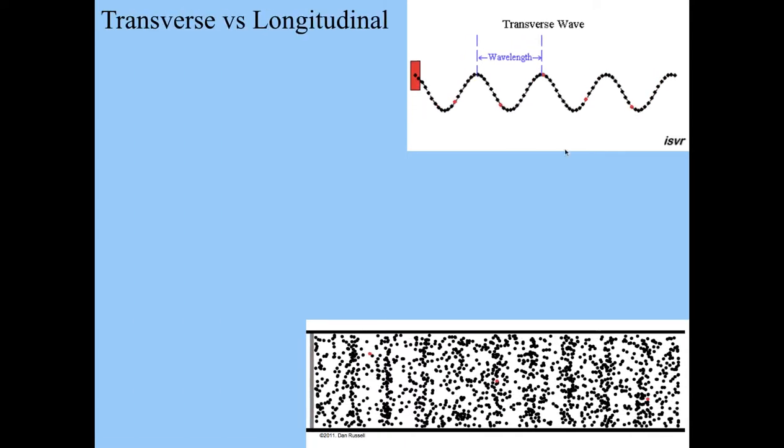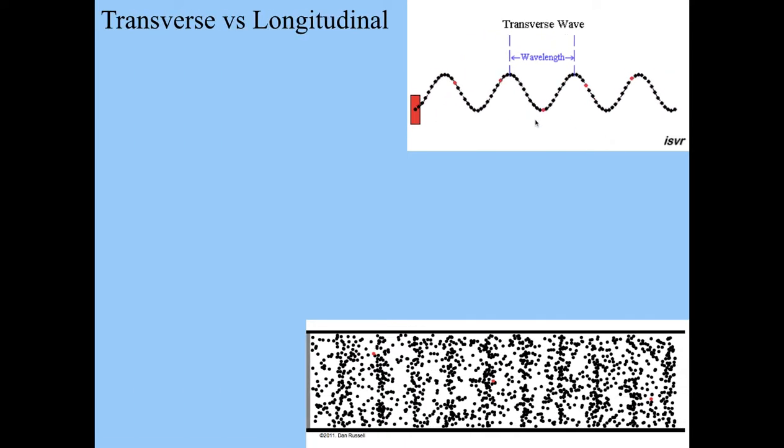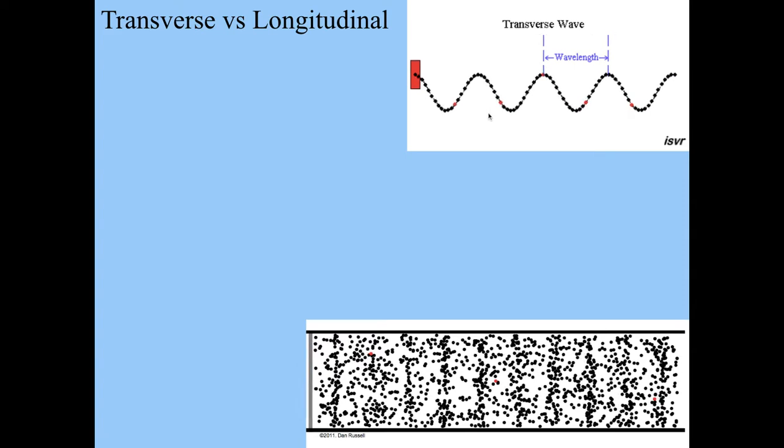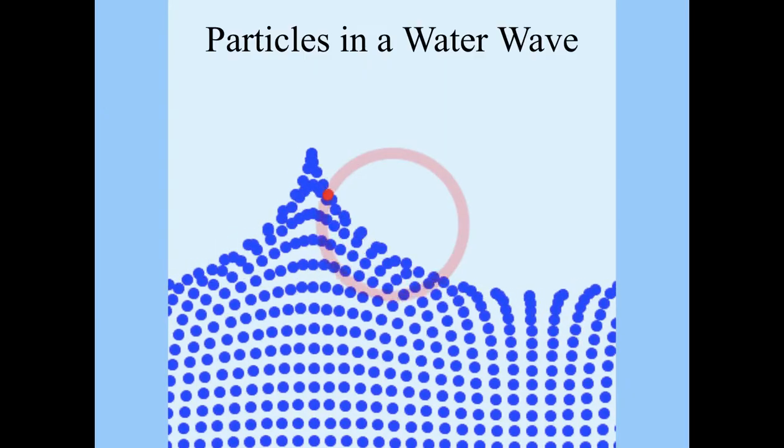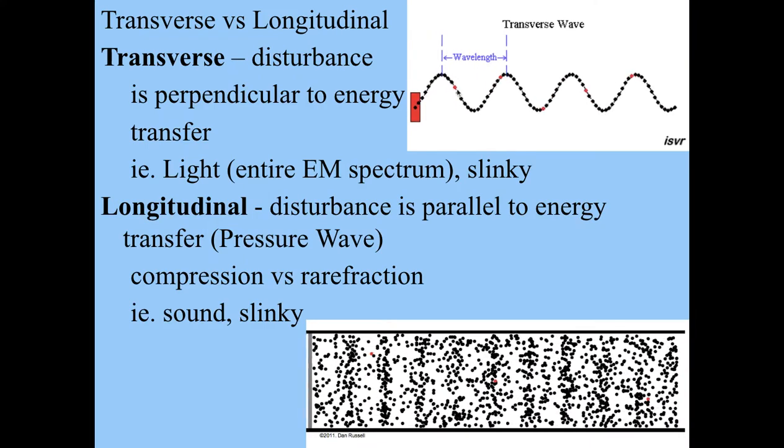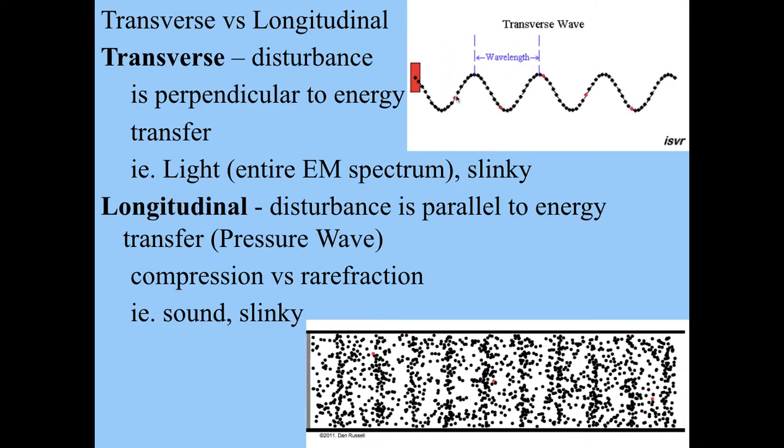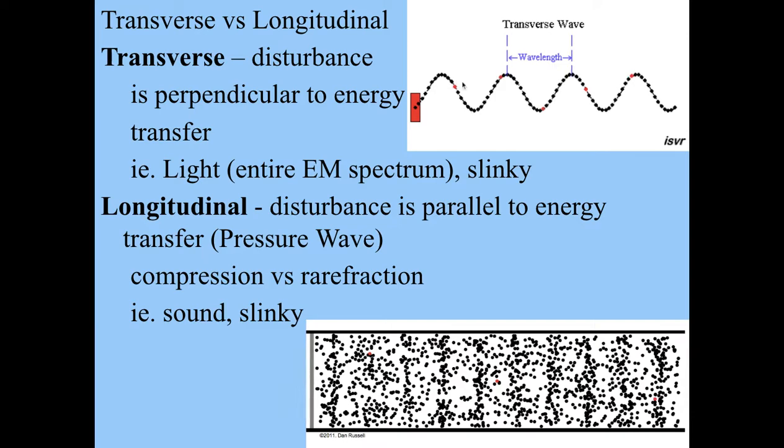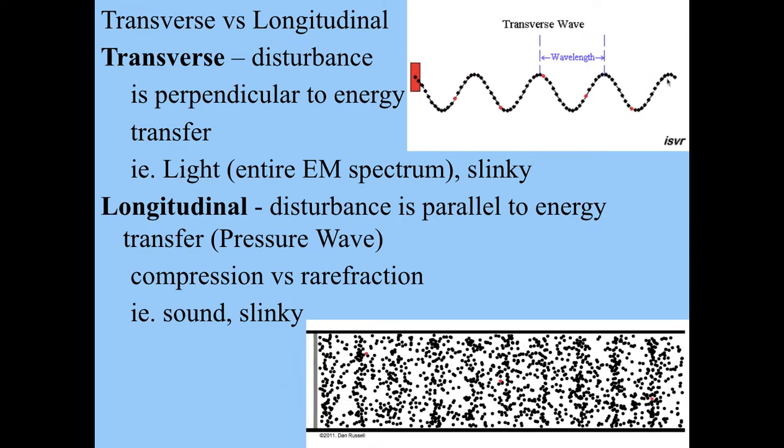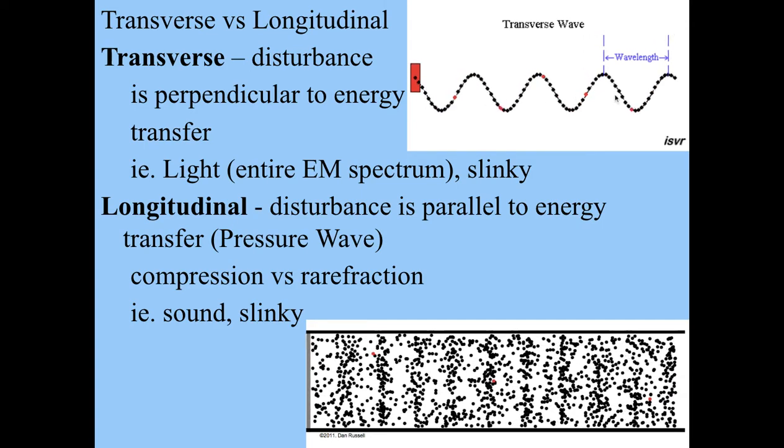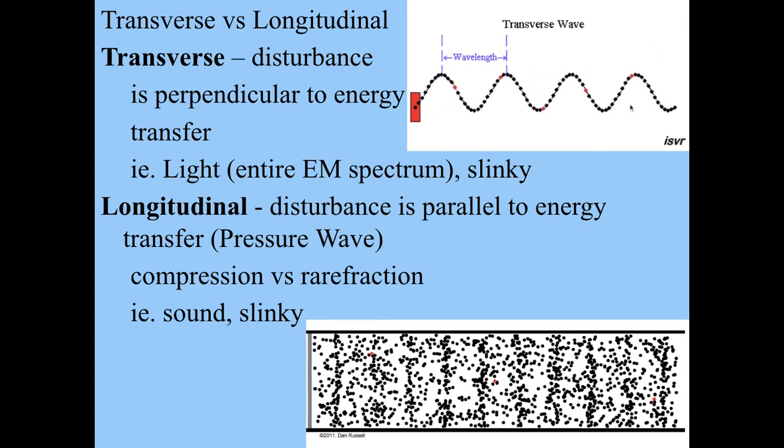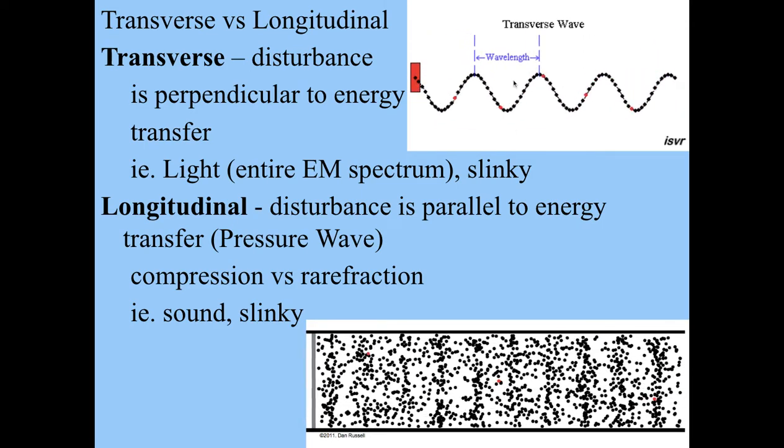So moving forward, I've got two types of waves. I've got transverse or longitudinal, and waves usually fit into one of these categories. So in a transverse wave, the material actually goes up and down as the energy goes horizontally. So the direction that the wave is traveling is actually perpendicular to the direction of the disturbance.